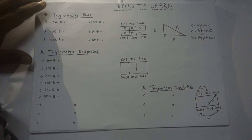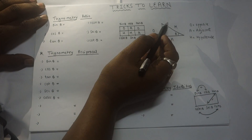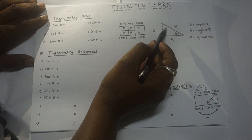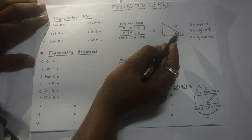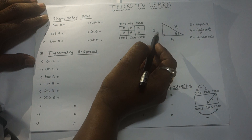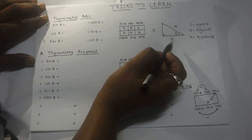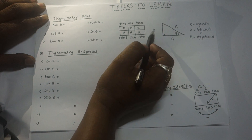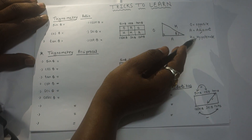We all know this is a right angle triangle — one angle is 90 degrees and the remaining angle is the acute angle. If I consider this angle as theta, then this side will be opposite, this will be adjacent, and this will be hypotenuse. So O stands for opposite, A stands for adjacent, and H stands for hypotenuse.